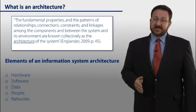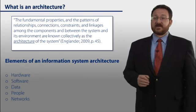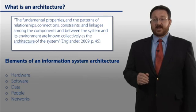So, in information systems, there are five elements of a system architecture. These are the hardware, software, data, people, and networks.